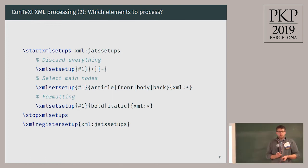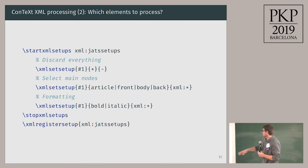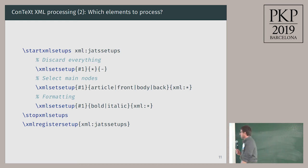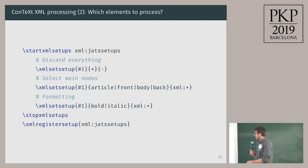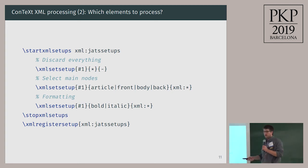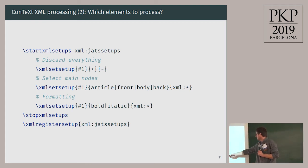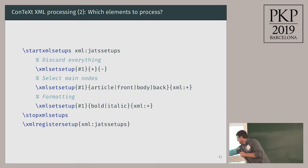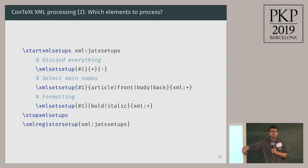In our setup file, we have a minimal setup like this — it's just an excerpt. What we do is start a new setup that I call XML JATS setups, where I say which elements do I want — nothing — so that nothing comes in that I don't want. Then I select all the elements that I really need: I start with article, front, body, back, and assign those to corresponding macros with the prefix 'xml:' — for example, xml:body will render the body, and the same with bold and italics. At the end, I register this setup and then we can go on.